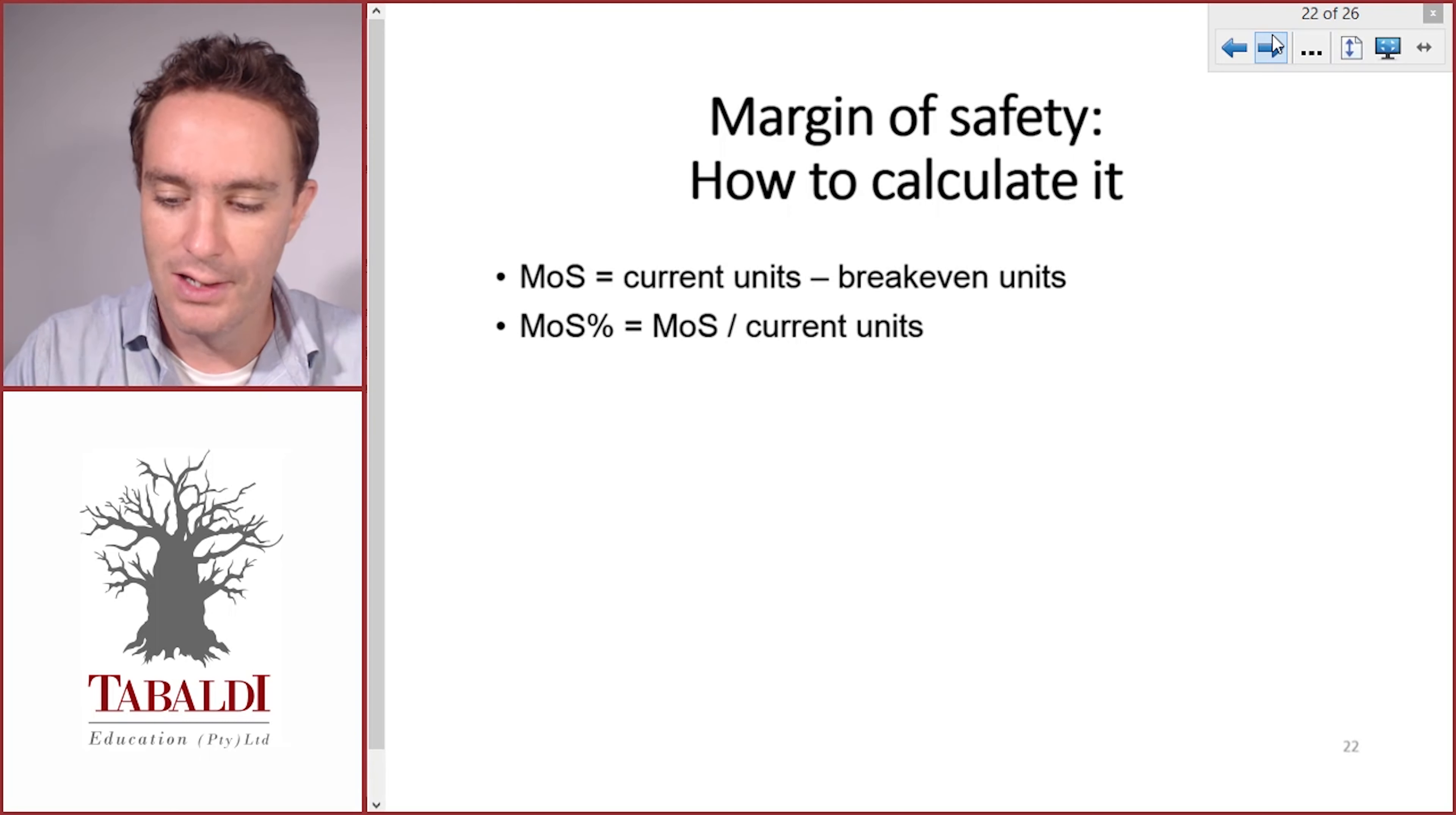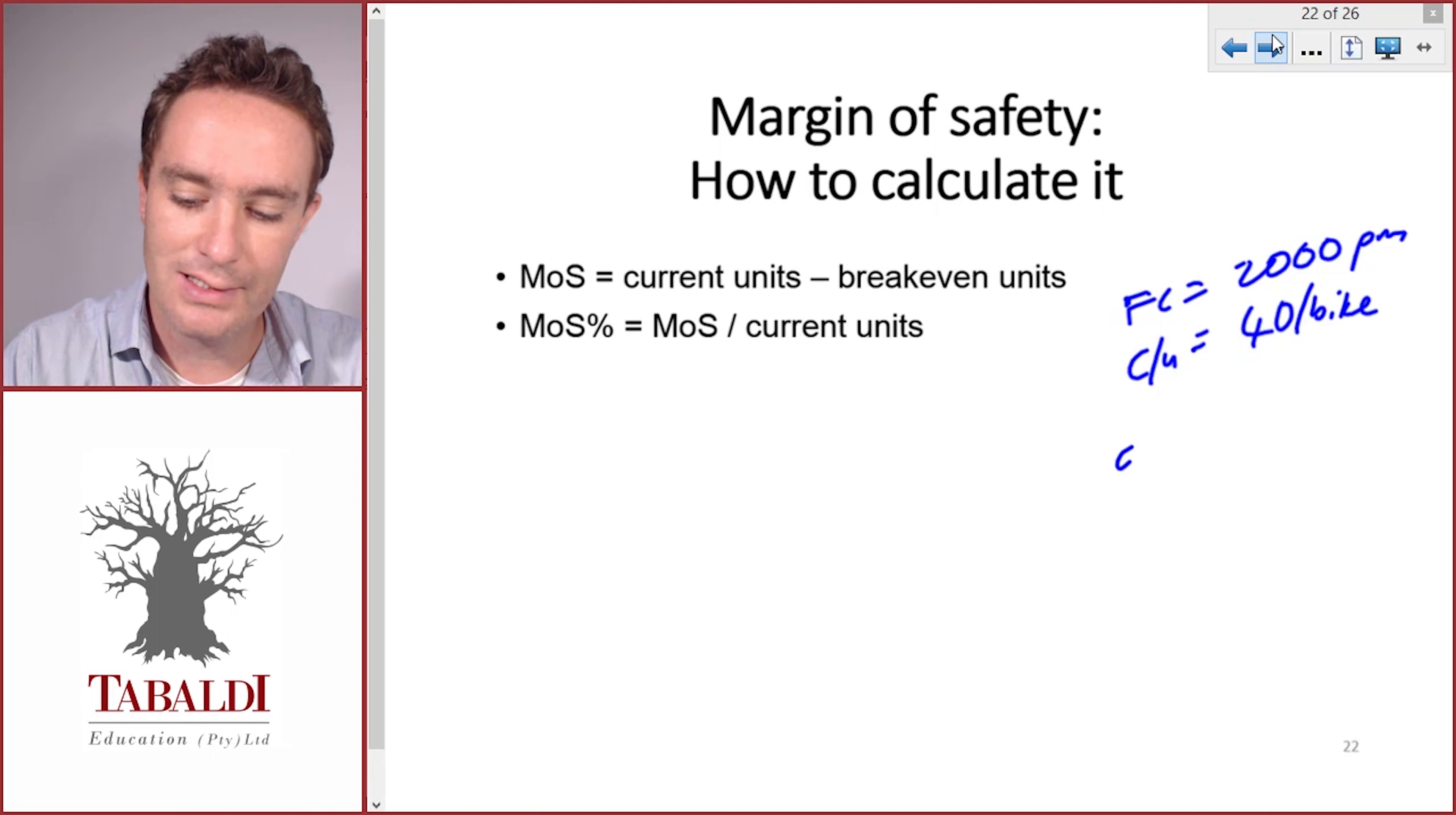Say our fixed costs are 2,000 per month, we make a contribution of 40 per unit per bicycle, and our current sales level is 60 bikes or 60 units. We're currently selling 60 units a month. Now we want to know what is our margin of safety. We first calculate the break-even point.